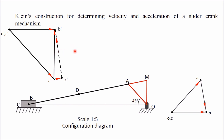To get the acceleration diagram, take A (the crank pin) as center and AM as radius and draw one circle.